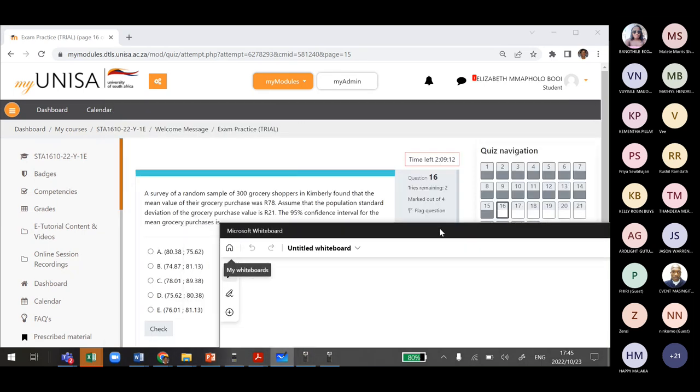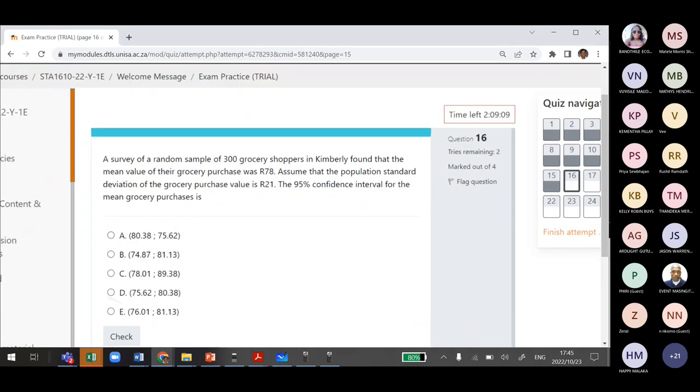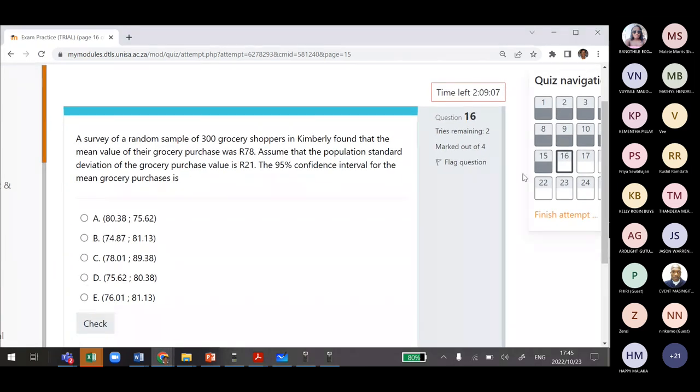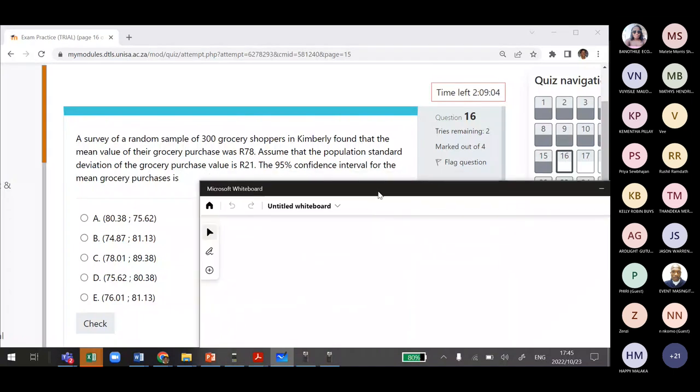Because we're given the population standard deviation, we need to go find the mean plus or minus the critical value of Z over 2 times the population standard deviation divided by the square root of N, which is the standard error.